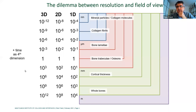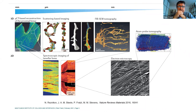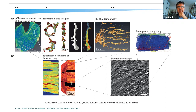We always have to choose which length scales we need and whether we need higher resolution or a better field of view. I haven't yet mentioned the fourth dimension — time — as a parameter we change. There is a wide range of techniques available today: light microscopy, X-ray tomography, scattering, diffraction, spectroscopy, and even atom probe tomography with atomic resolution in 3D. When thinking about synchrotron, we have to keep all these other tools in mind.